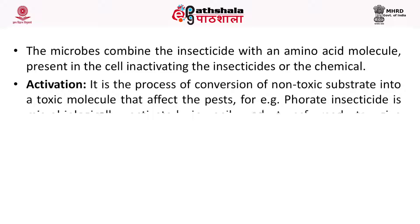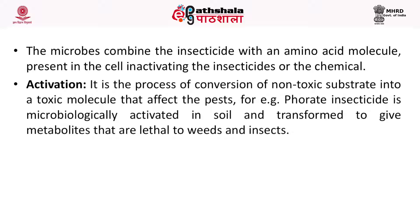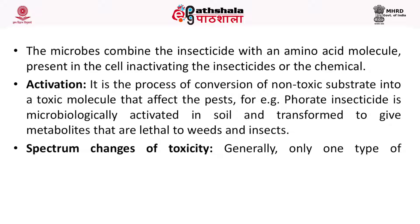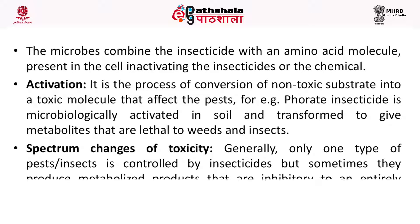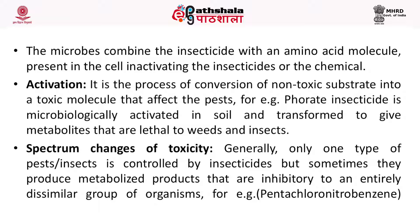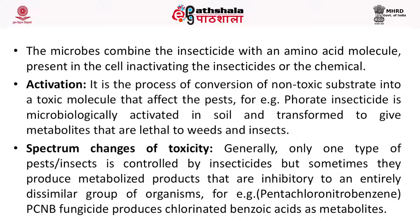Next is activation: it is the process of conversion of a non-toxic substrate into a toxic molecule that affects the pest. For example, phorate insecticide is microbiologically activated in the soil and transformed to give metabolites that are lethal to weeds and insects. Next are spectrum changes of toxicity. Generally, only one type of pest or insect is controlled by an insecticide, but sometimes they produce metabolites inhibitory to an entirely dissimilar group of organisms. For example, PCNB (pentachloronitrobenzene) fungicide produces chlorinated benzoic acid as metabolites.